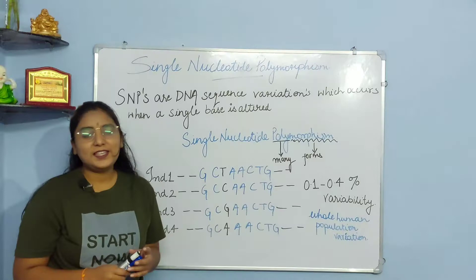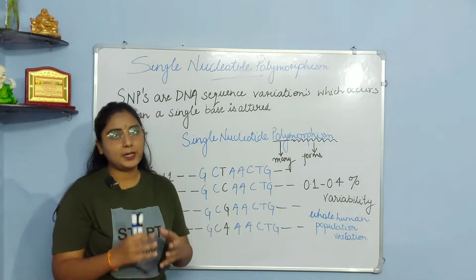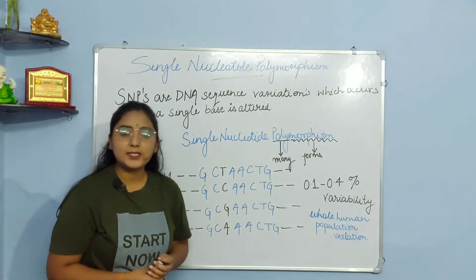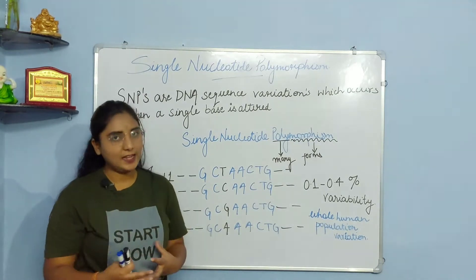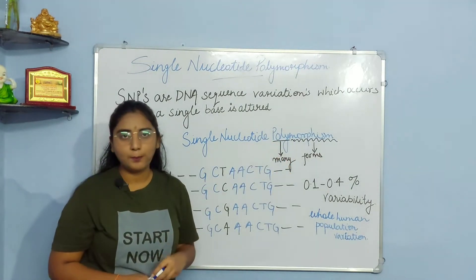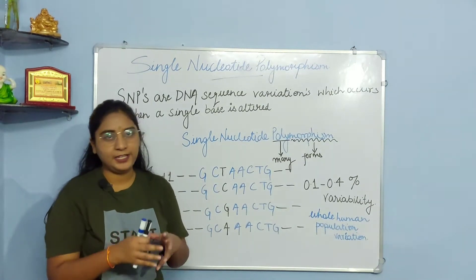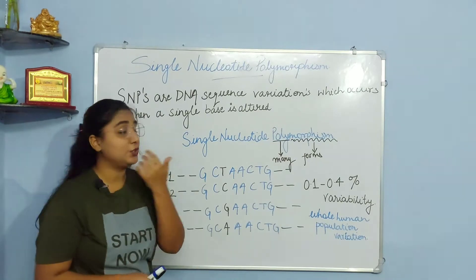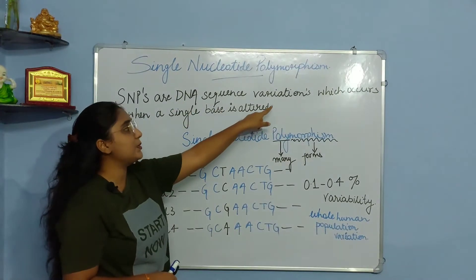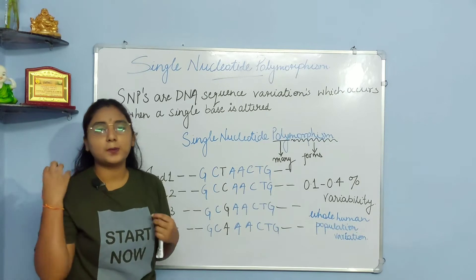Single Nucleotide Polymorphism ka matlab hai kya? Single matlab ek, nucleotide matlab base pairs — jaise ki adenine, guanine, cytosine and thymine — aur polymorphism matlab poly means many, morphism means form. That means jab ek single nucleotide alag alag forms mein present hai hamare DNA ki sequence mein. SNPs, or Single Nucleotide Polymorphisms, are DNA sequence variations which occur when a single base is altered.